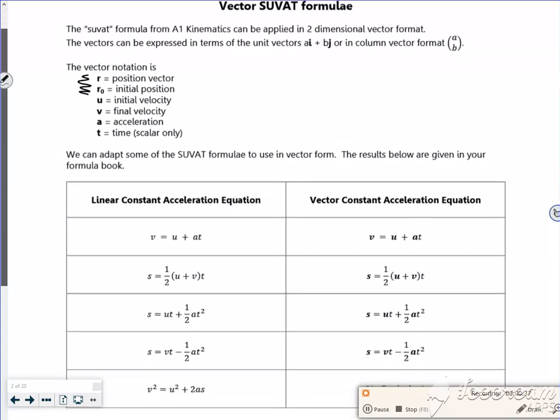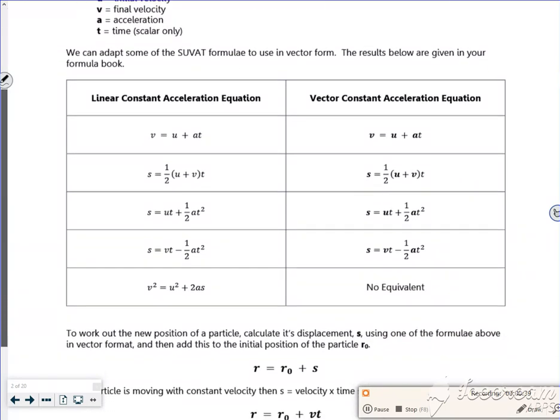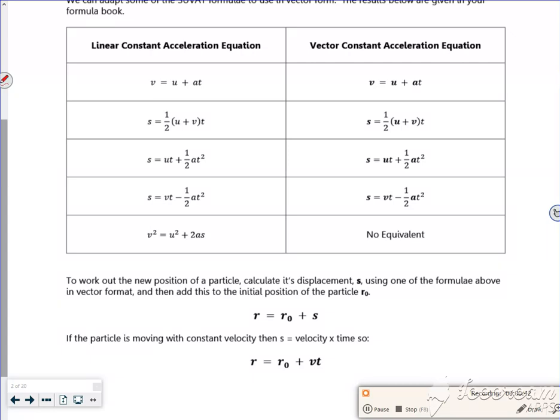Right, so what we used to call RUVATS, now everything's a vector. So you've got v, u, and a as vectors. S, u, and v are vectors. S, u, a is vectors. S, v, a is vectors. No vectors for something that's squared. Now these s ones are just, kind of, how far it's gone.